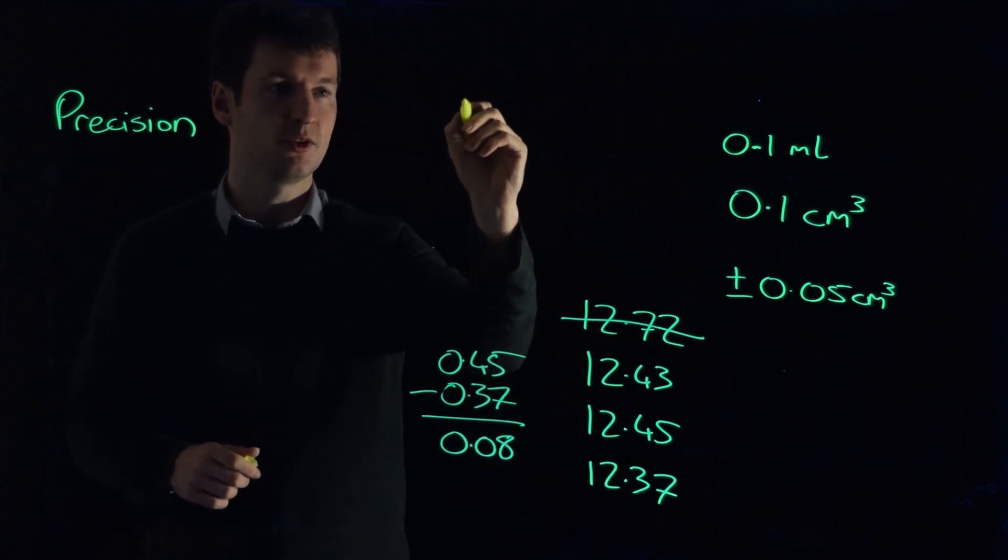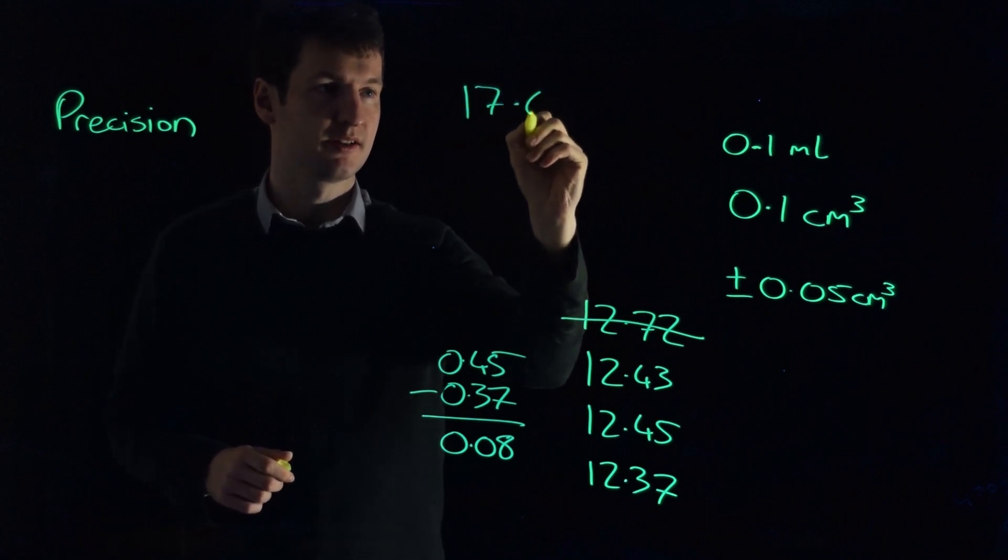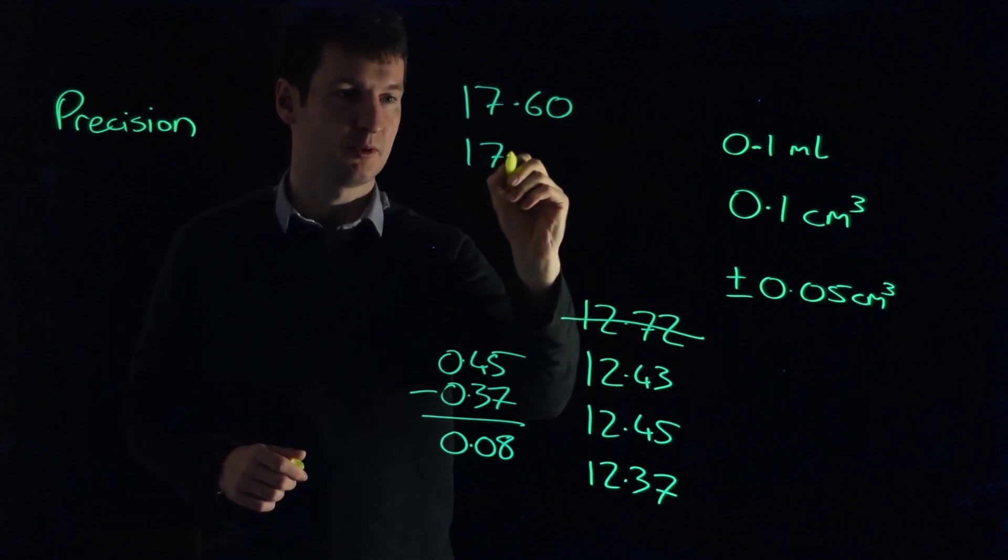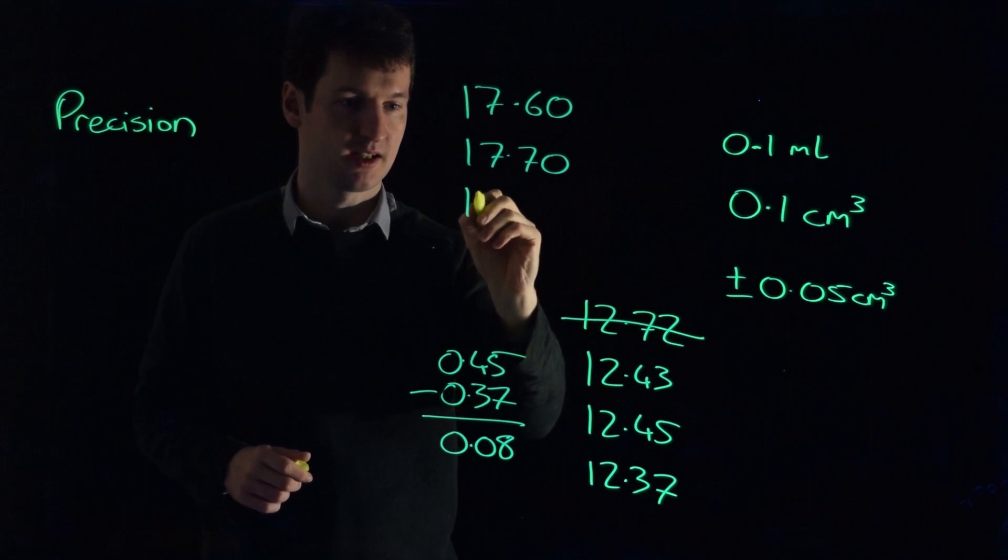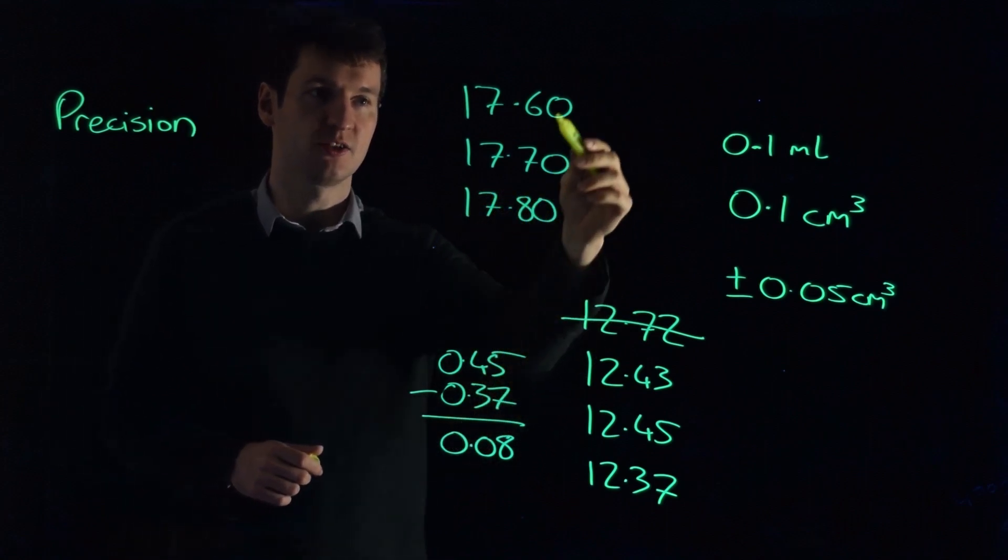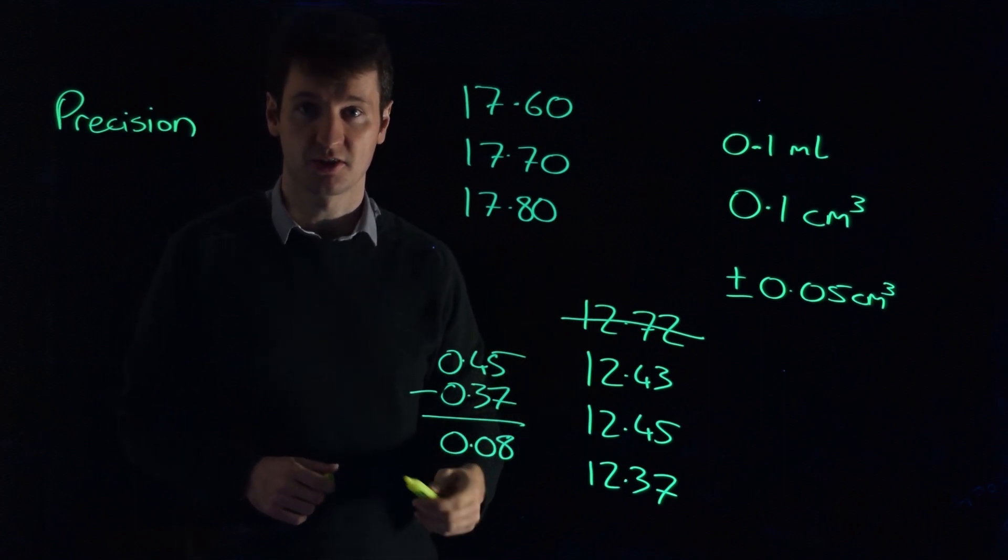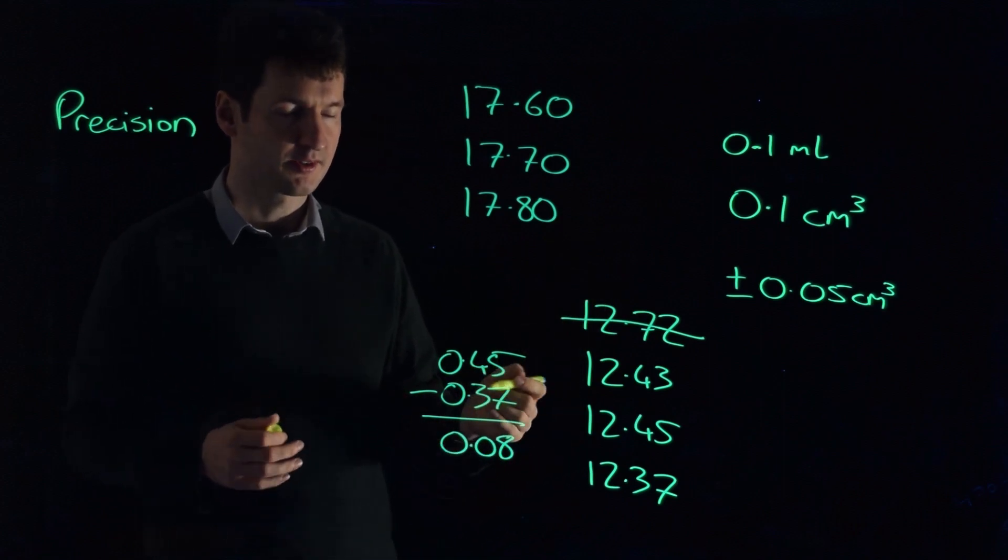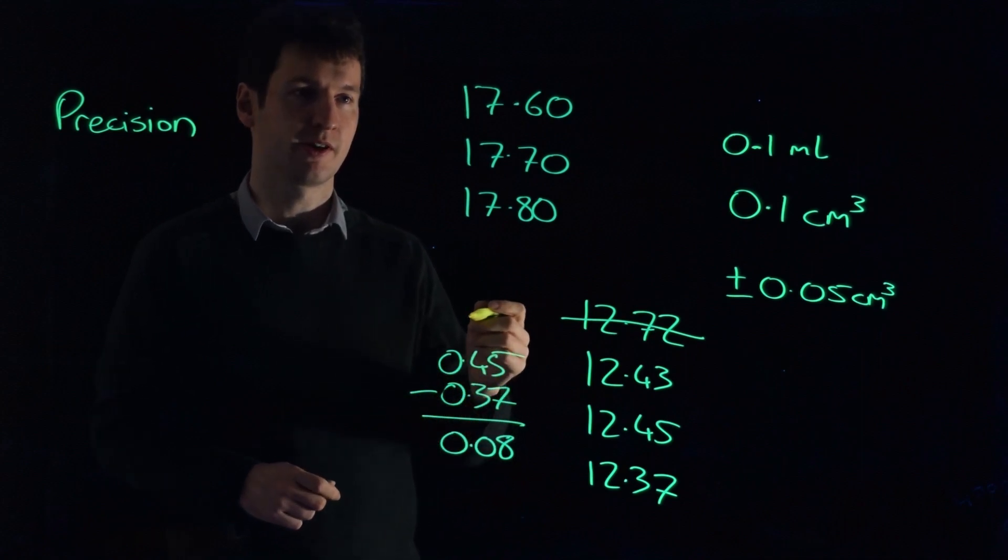Let's try another example. What if you get 17.60, 17.70, 17.80? Well, there's a one in a thousand chance that you'll get three zeros as your final digit three times in a row. So if you're getting a lot of zeros at the end, you want to check how you're reading your burette.